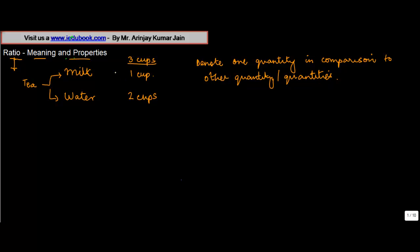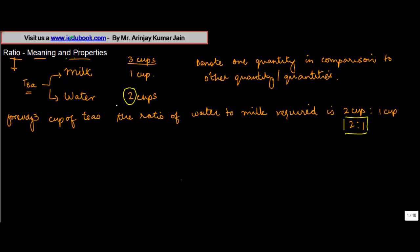Now when we use the milk and the water to prepare tea, we say that for every three cups of tea the ratio of water to milk required is two cups is to one cup, or simply two is to one. Now basically what we mean when we say the ratio is the relevant proportion of one quantity which is that of water which is required vis-a-vis another quantity.